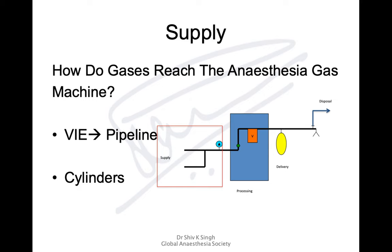Supply is basically about how gases reach the anesthesia machine. They can come through the pipeline from a VIE or banks of cylinders in the manifold room, or from cylinders at the back of the machine.